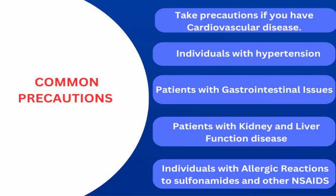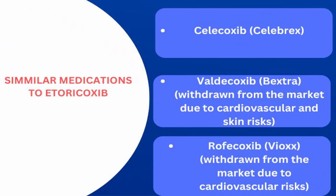Other medications that work similarly and fall within the same category of selective COX-2 inhibitors include celecoxib, which we discussed as Celebrex; rofecoxib, which came with the brand name Vioxx but was withdrawn from the market due to cardiovascular risks; and valdecoxib, which was also withdrawn from the market due to cardiovascular risks.